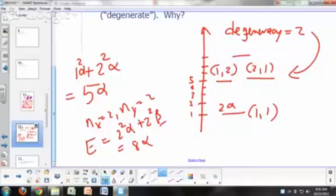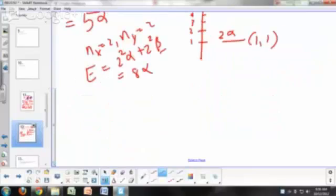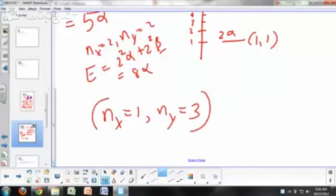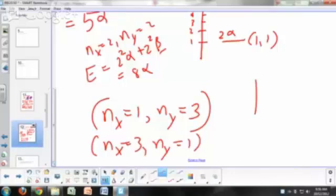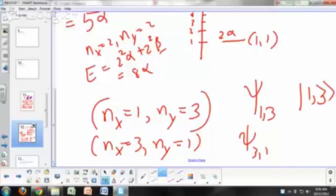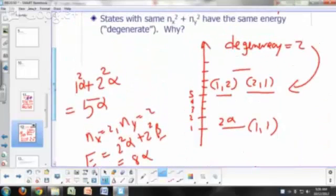What's the next allowed quantum state? Next one is 10 alpha. That would be n sub x equals 1, n sub y equals 4, or n sub x equals 3, n sub y equals 1. So you can call this psi 1, 3 and psi 3, 1. Or you can use the ket notation. You can say ket 1, 3 and ket 3, 1. So you can specify your wave function by just listing the quantum numbers. So the next allowed energy level is going to be 10 alpha. So that one has a degeneracy of 2.